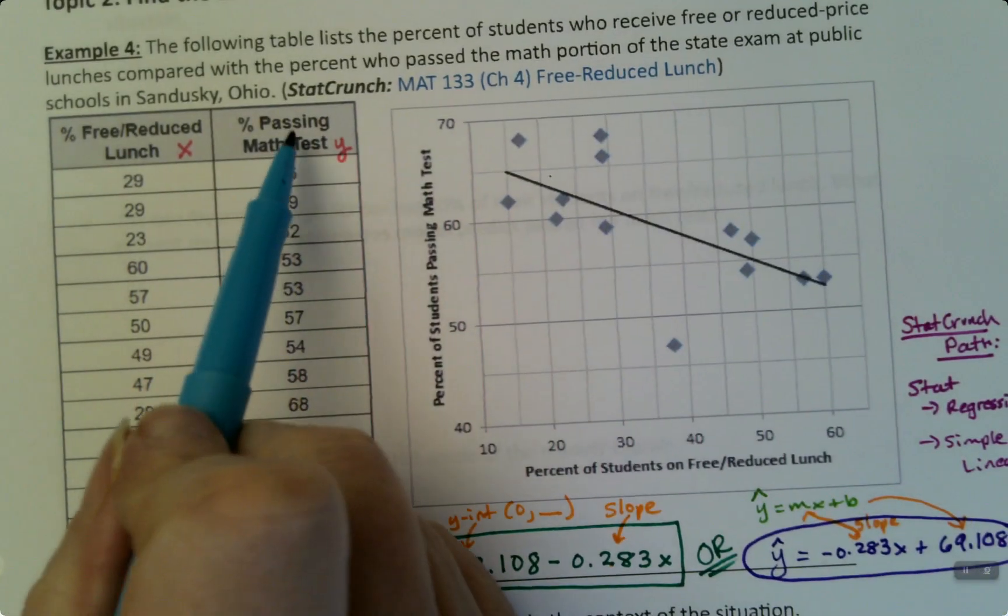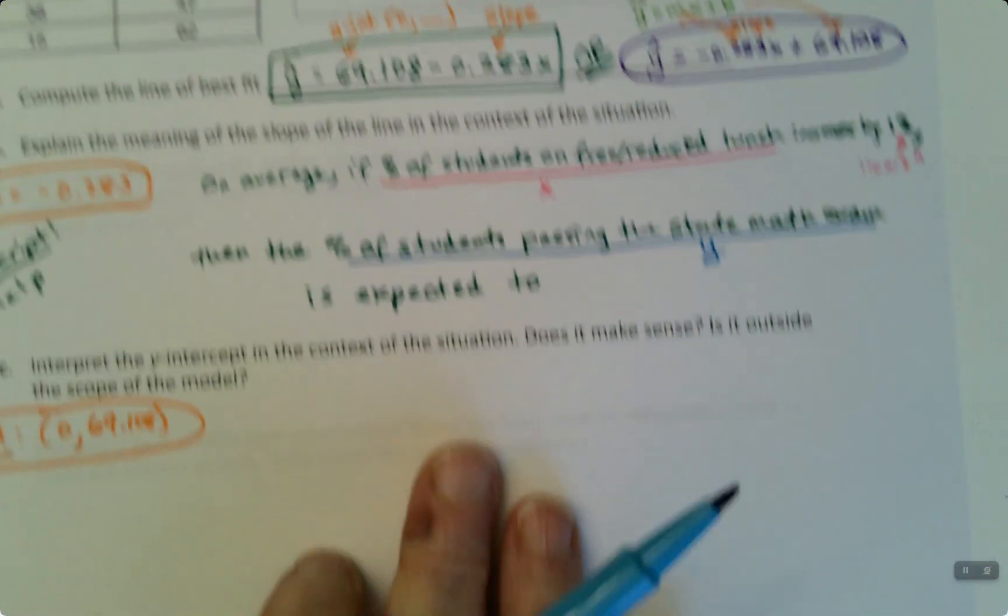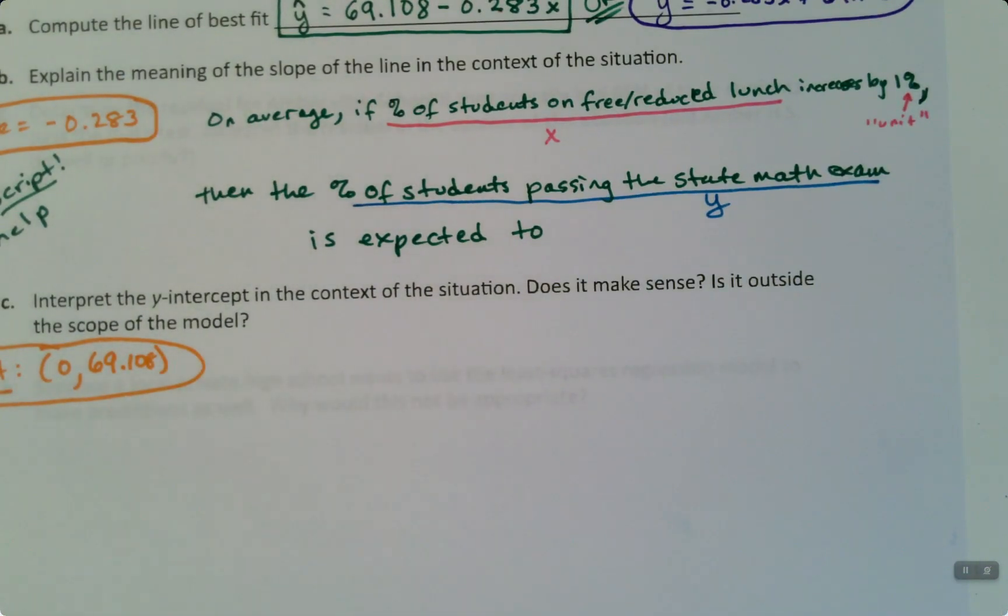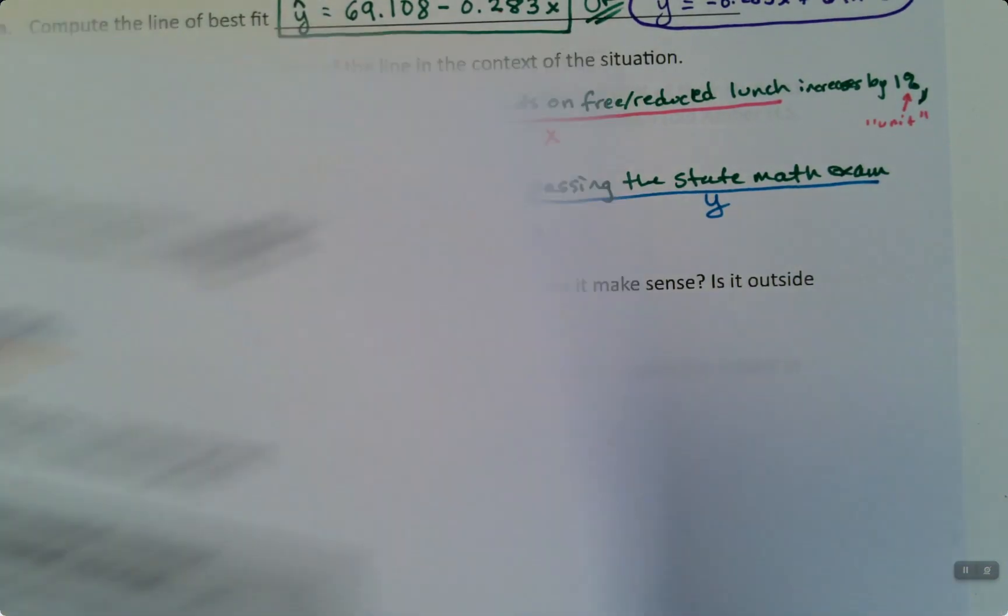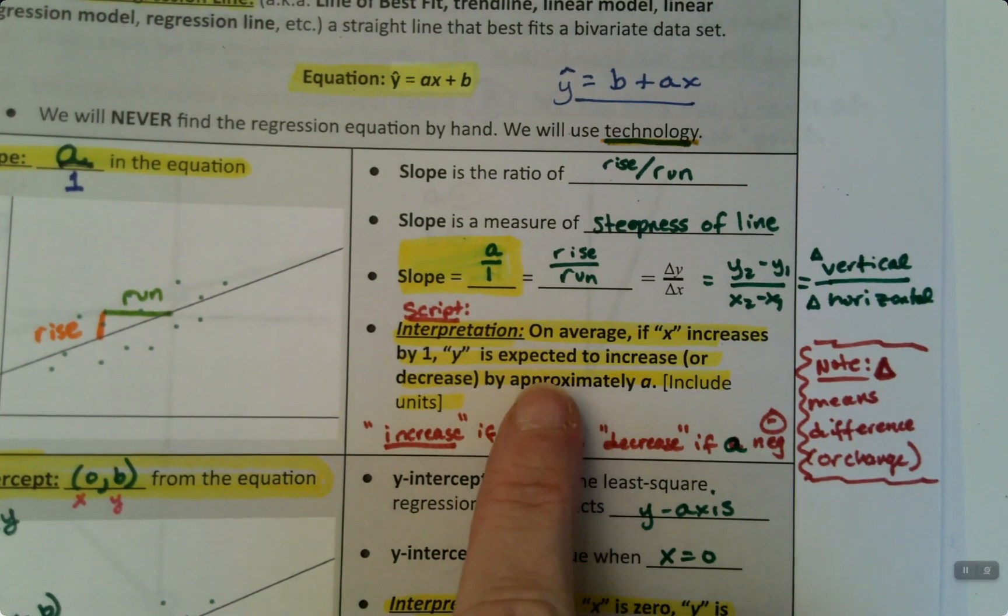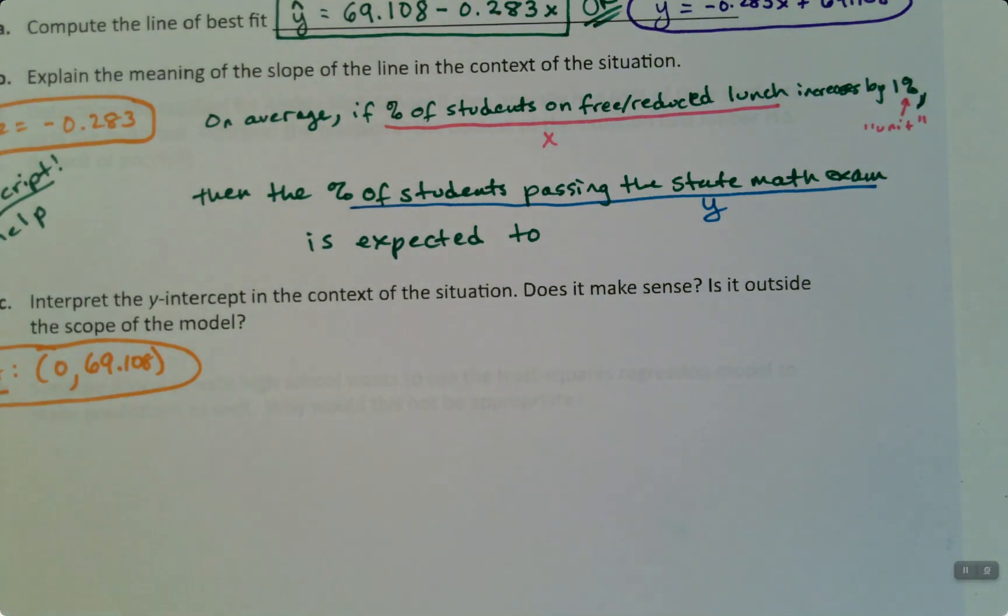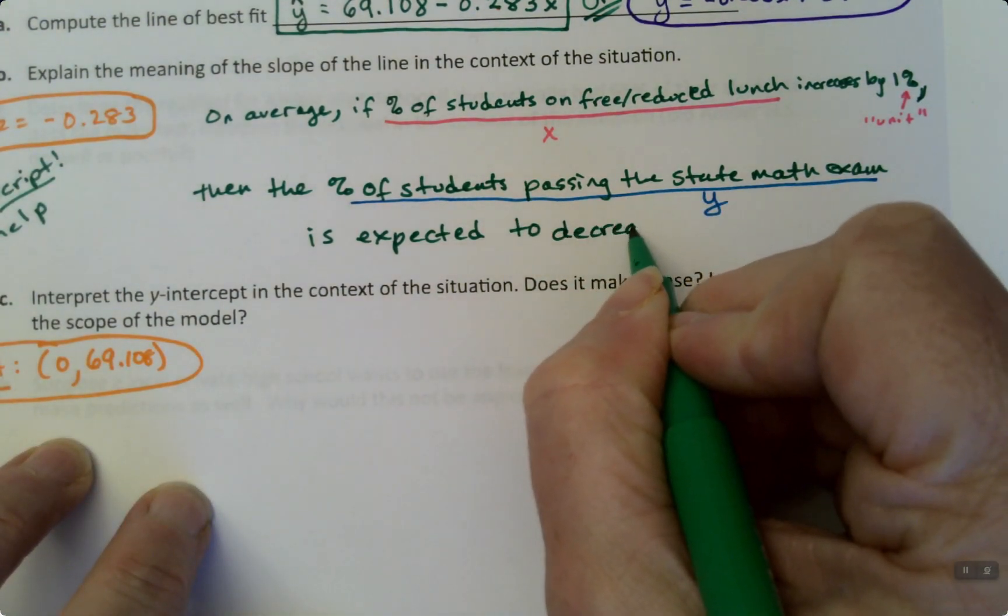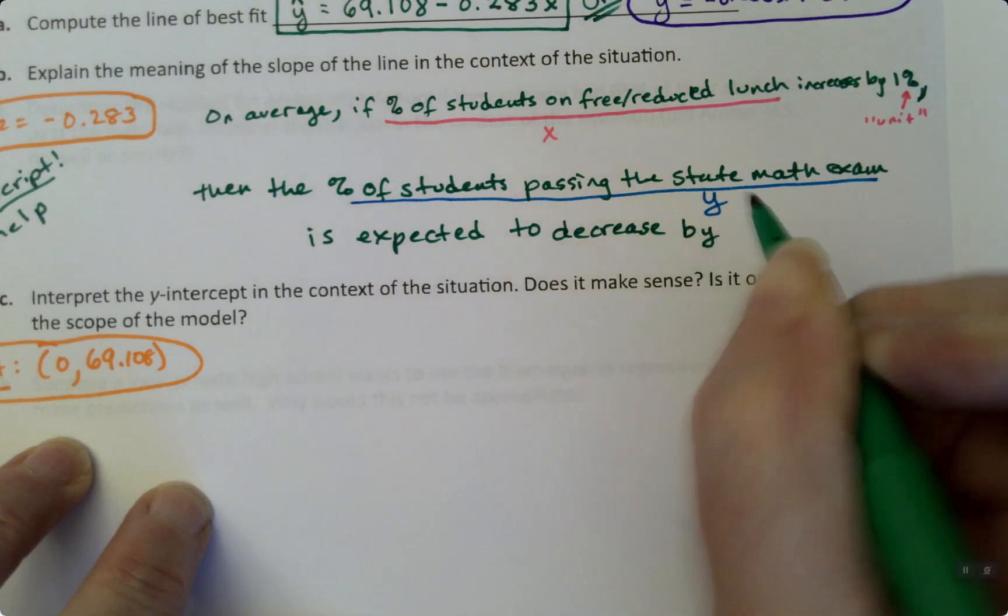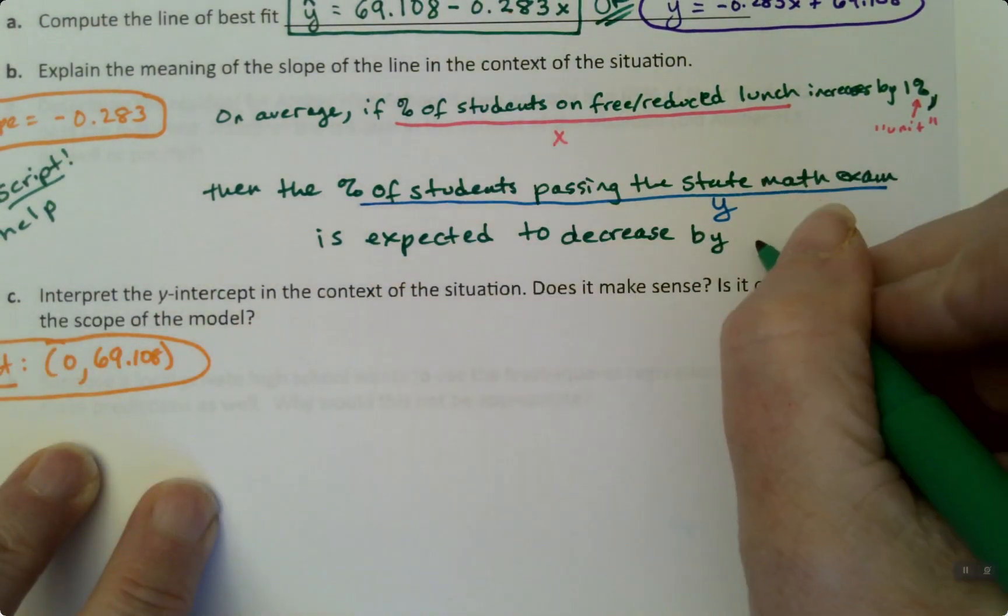So the percent of students passing the state math exam, that's Y. All of that, that's what Y is. It's right here, percent passing the math test. Is expected to, and if you look at the script, it says increase or decrease, but you don't write both of the words. You have to choose. So since it's a negative slope for us, we're going to choose decrease.